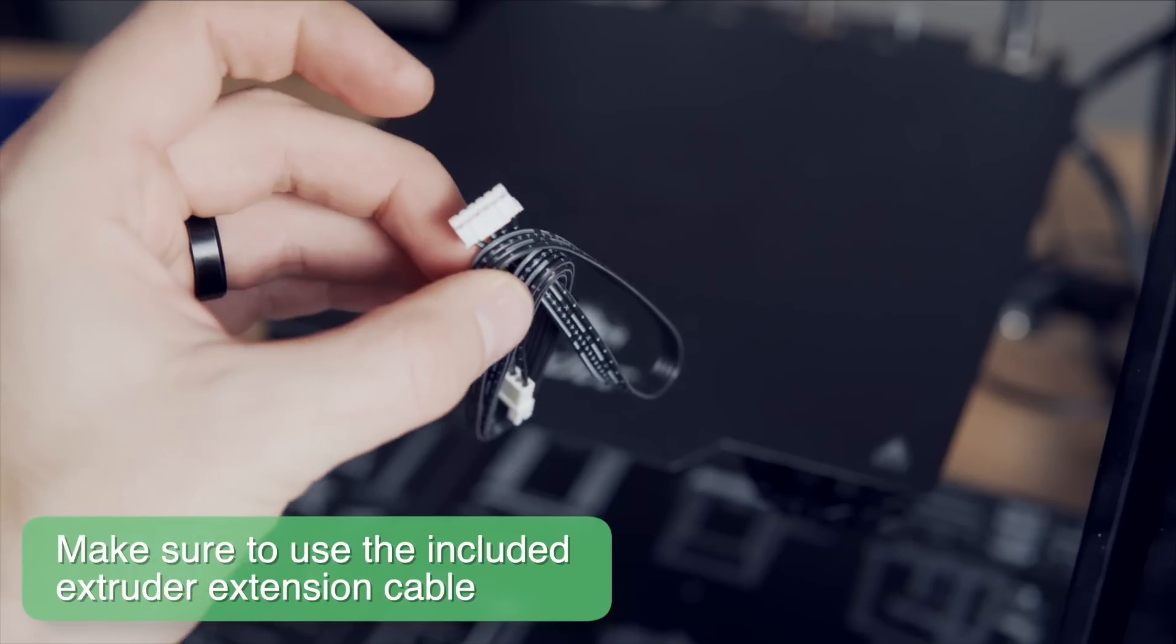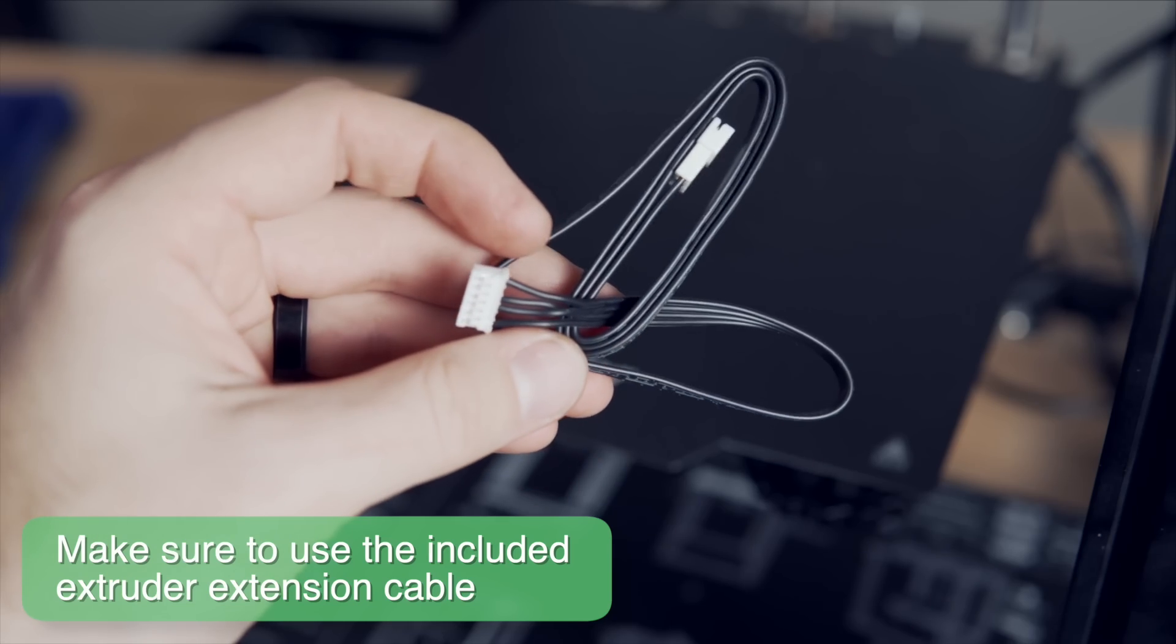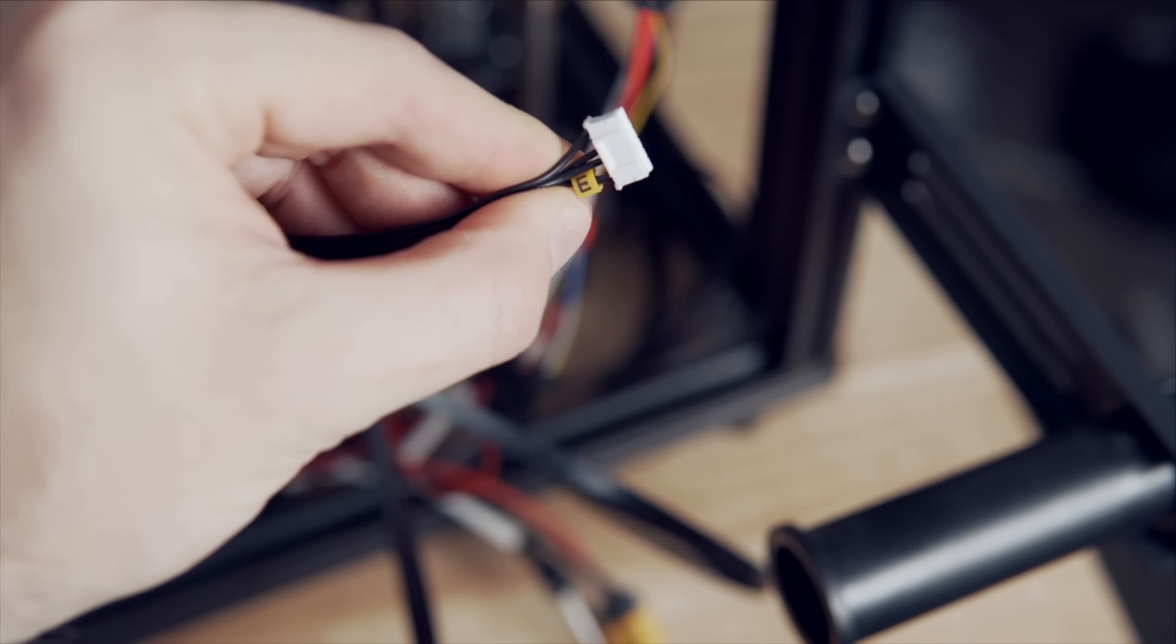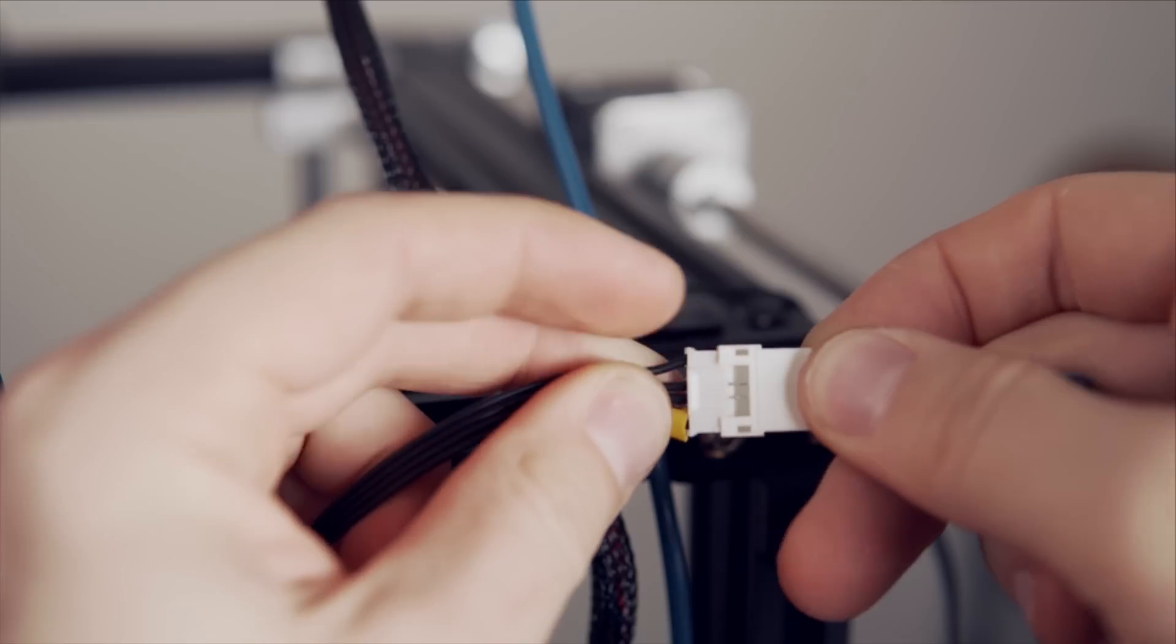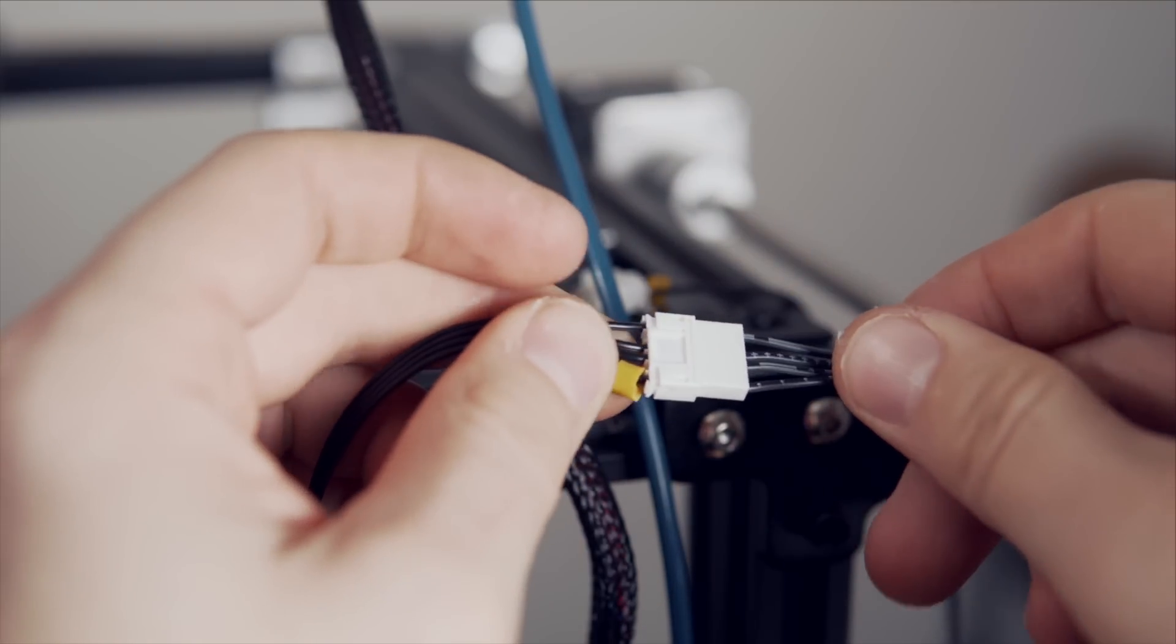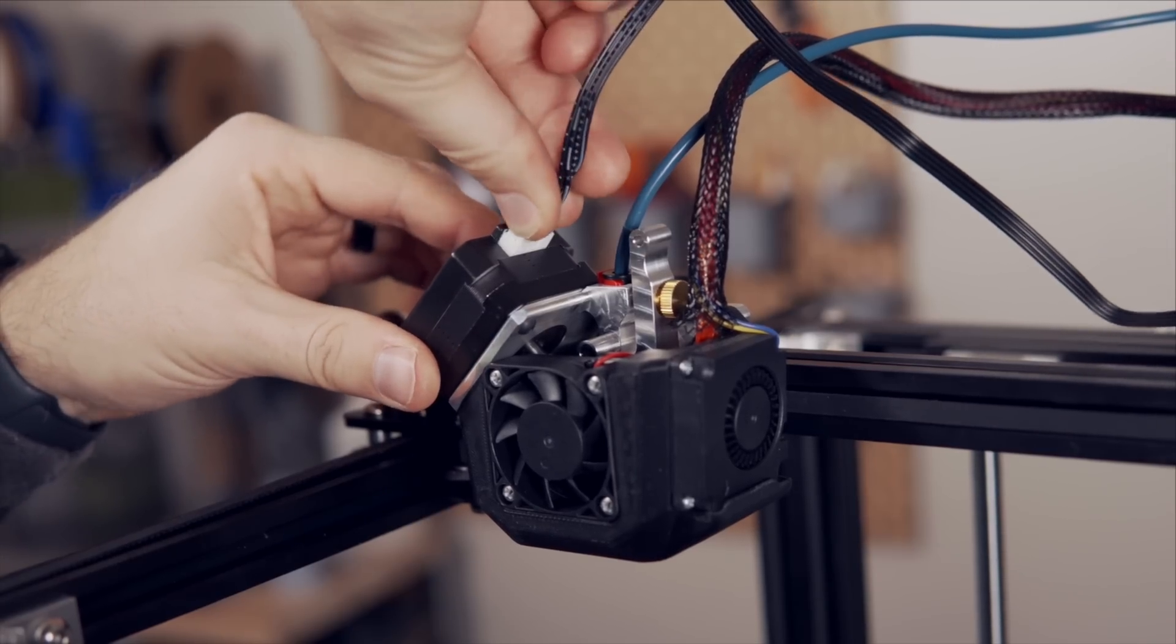Now we are ready to install the included extruder extension cable. Make sure that you use the included cable. We'll take our old cable and we'll fit this into the female end of the extension cable. It'll only go in one direction because of the notches, so just make sure you line them up and press them into place. Then plug the other end into the stepper motor on the NG extruder.